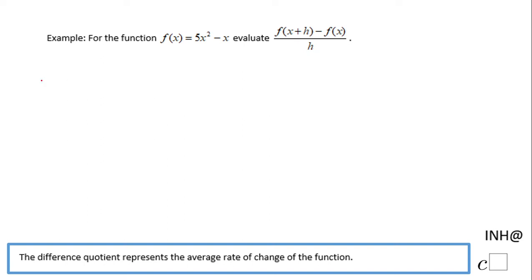Welcome or welcome back to I Need Help at C Squared. In this example we need to find this expression which is called the difference quotient and it represents the average rate of change of this function. It's very important in many areas, especially in calculus when you're going to discuss average rate of change and instantaneous rate of change. But let's take a look at how we find this here.